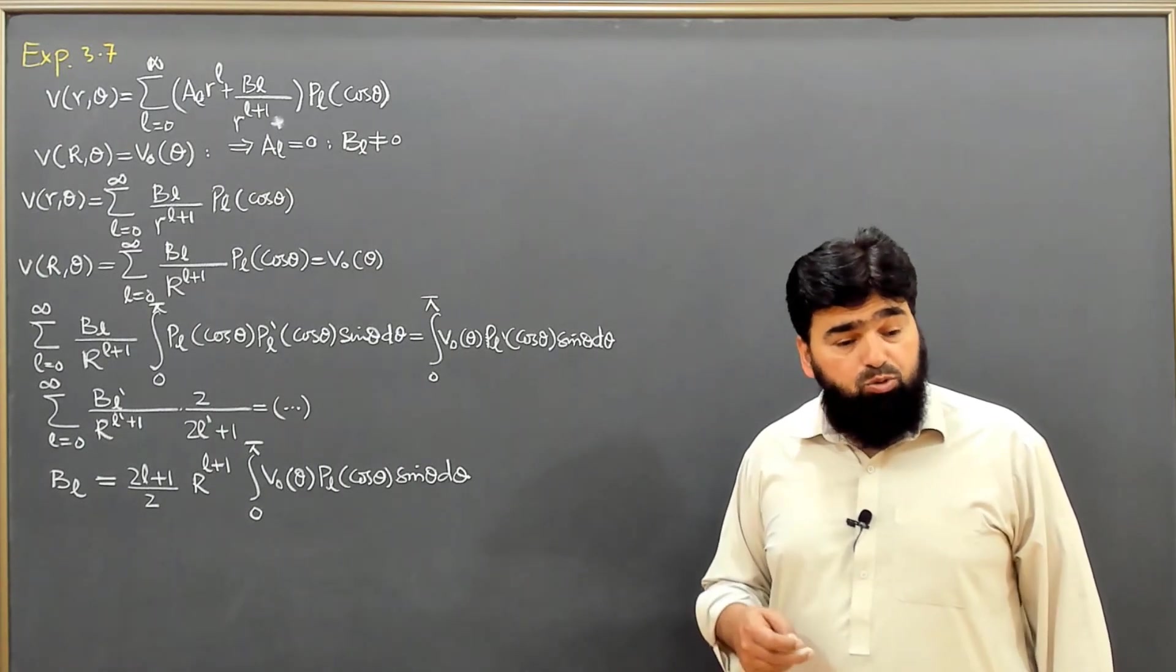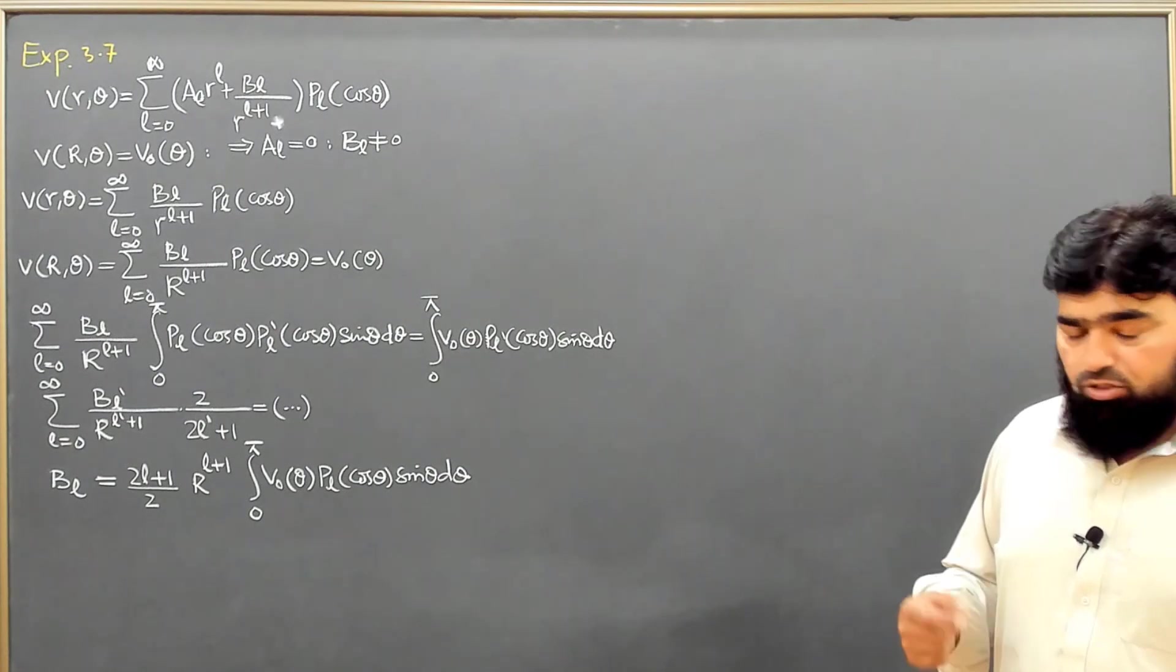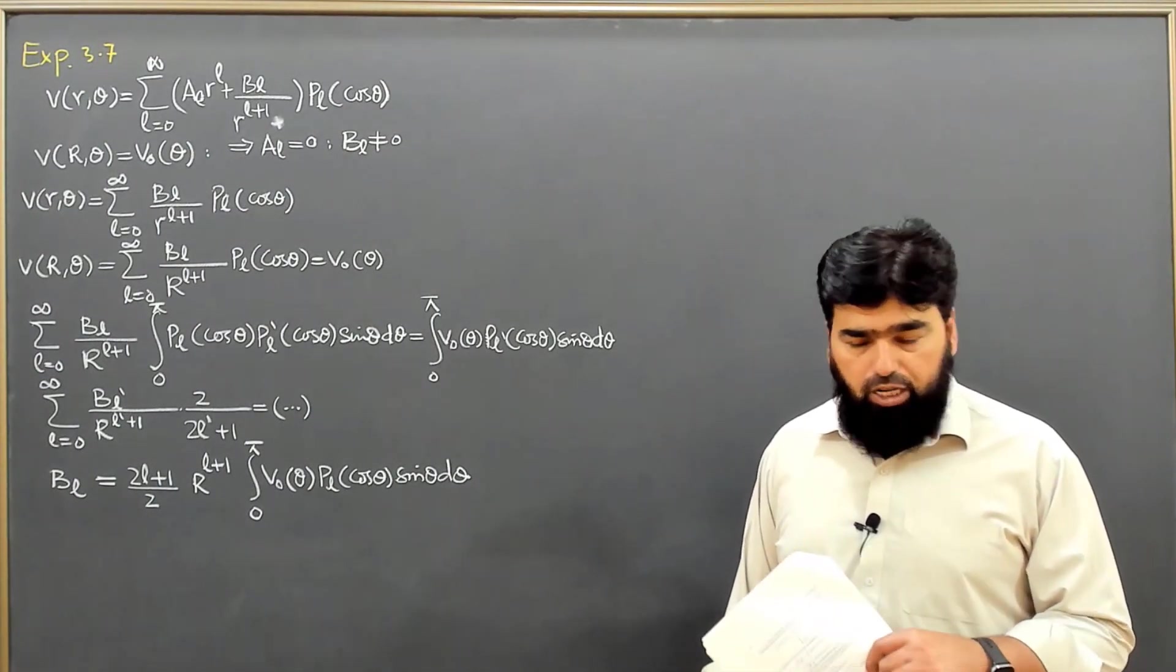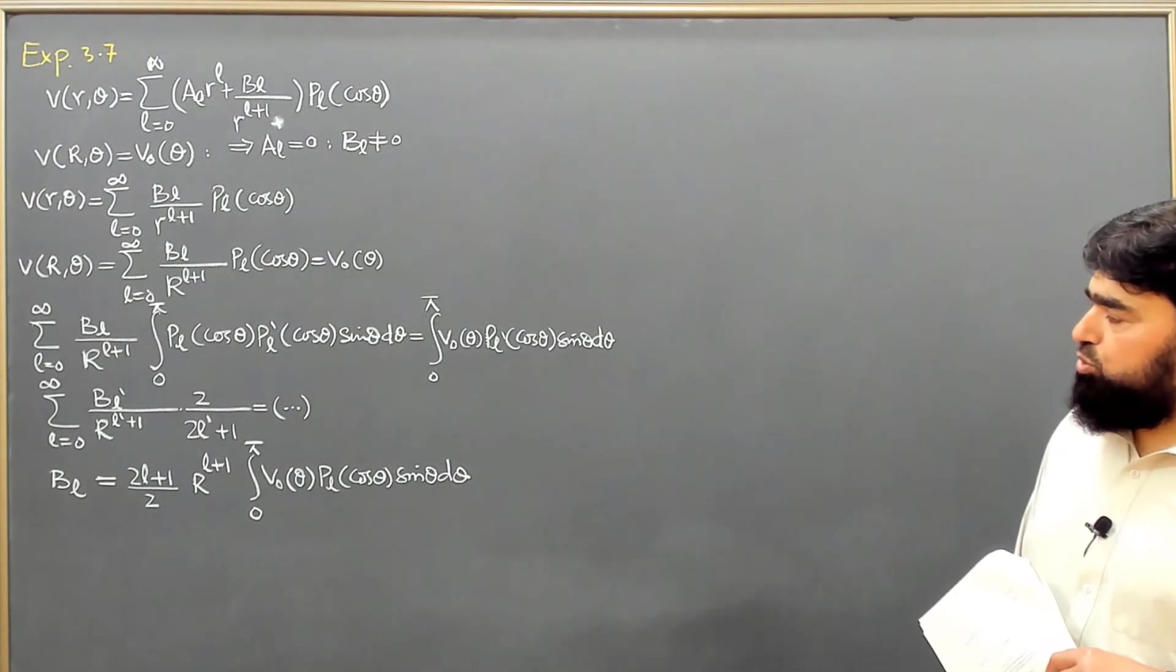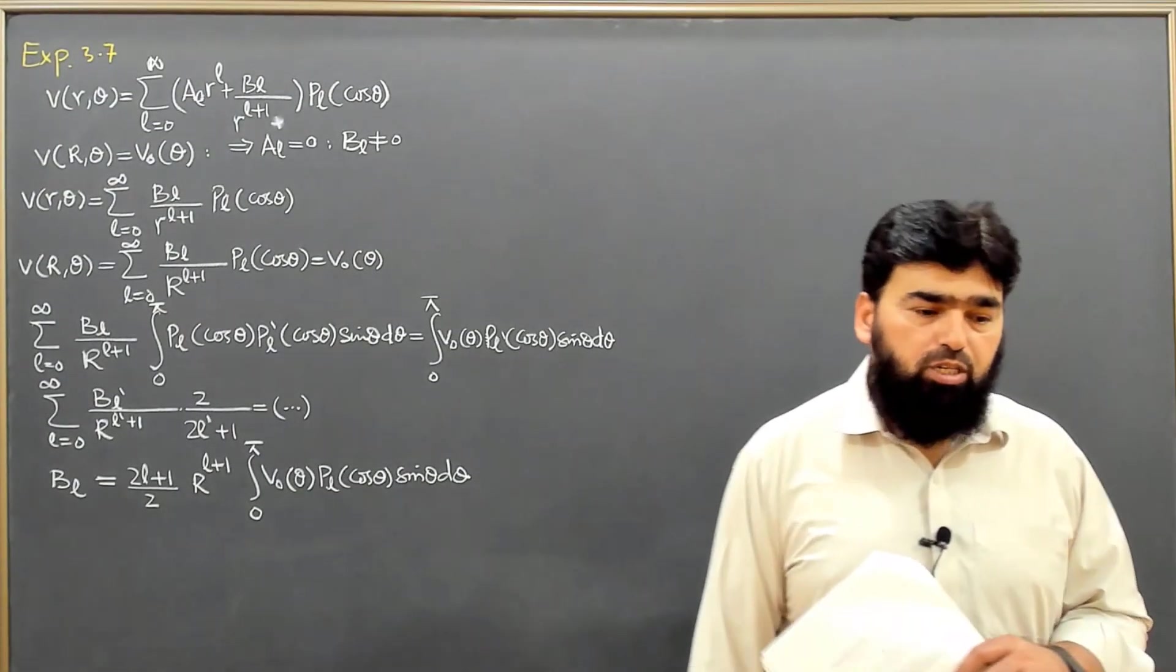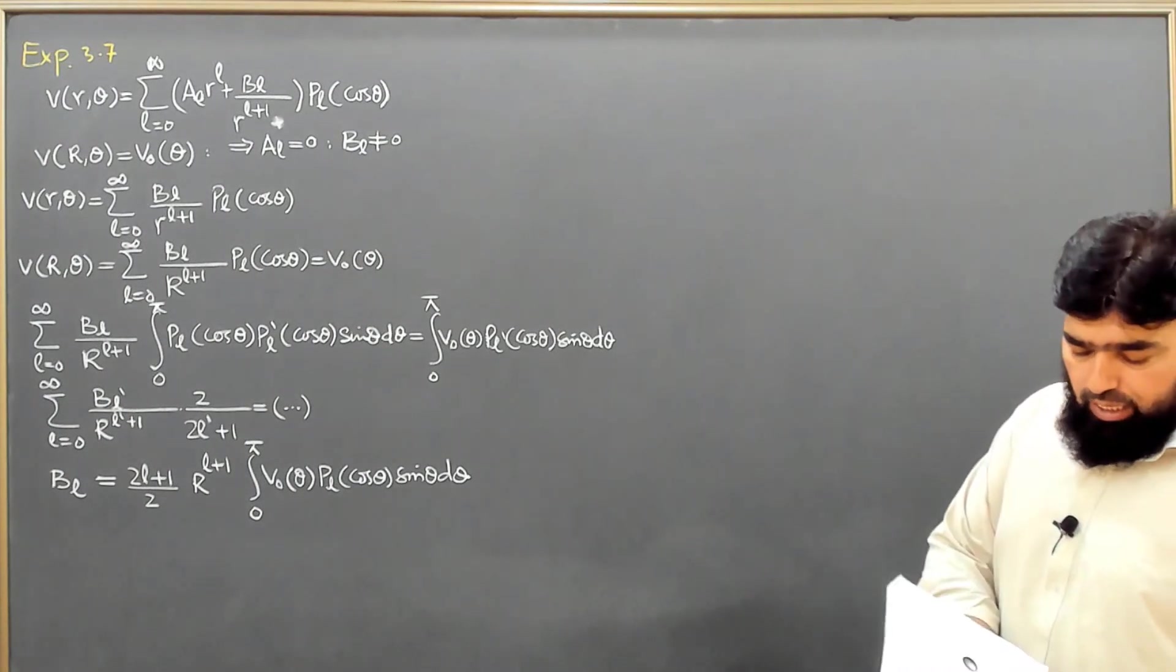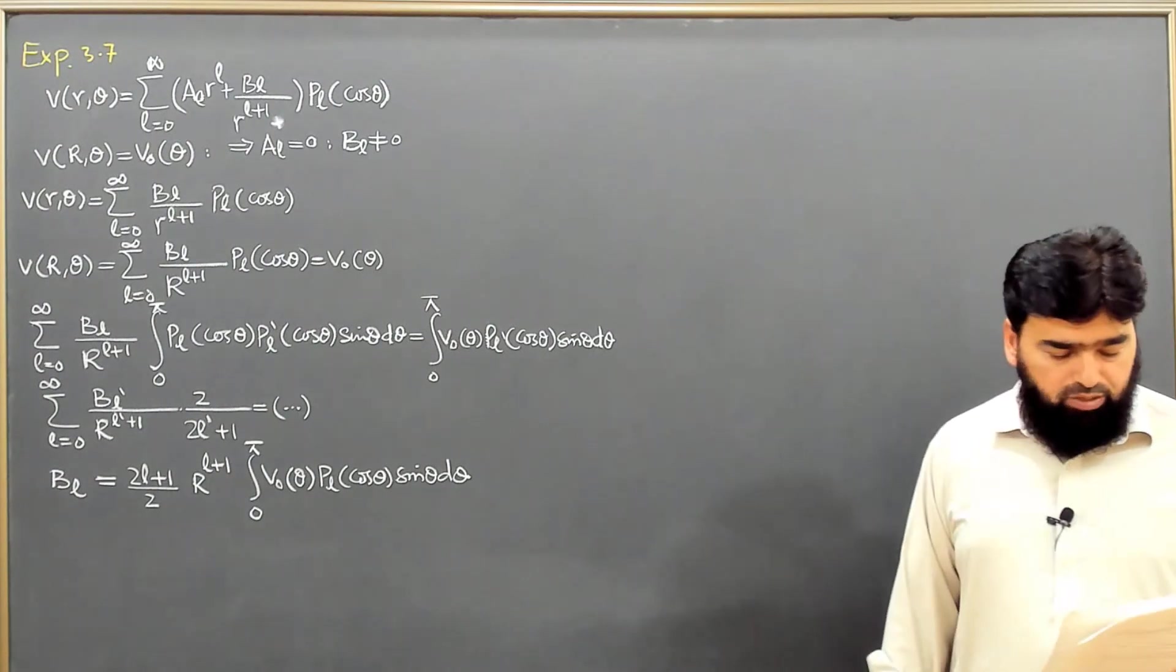In this case, we will have B₀ and B₁ here, then write the final solution. But it is done in the book up to here. So if you want to do practice and proceed further, then specify V₀(θ) or take the V₀(θ) value from the previous problem and you will be able to solve this problem. And with this, example 3.7 is done.